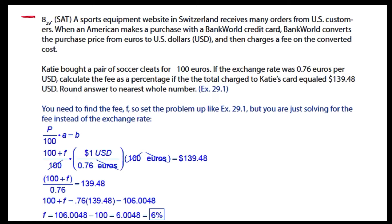Number eight. We have a lot of words here, but we just need to read through what's going on and see that Katie bought a pair of soccer cleats for 100 euros. If the exchange rate was 0.7 euros per U.S. dollar, calculate the fee as a percentage if the total charge to Katie's card equaled 139.48 U.S. dollars.